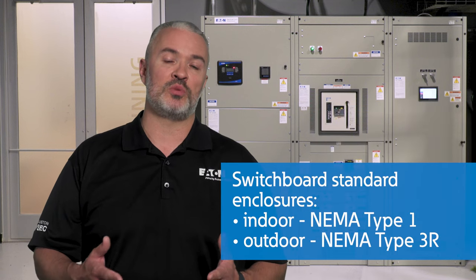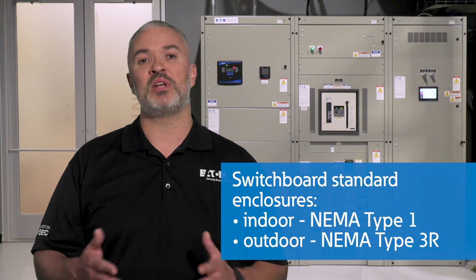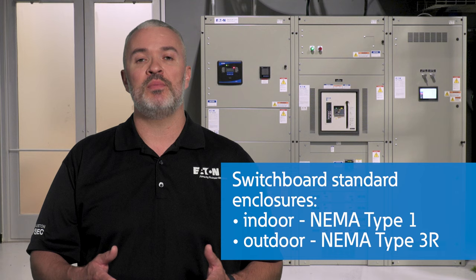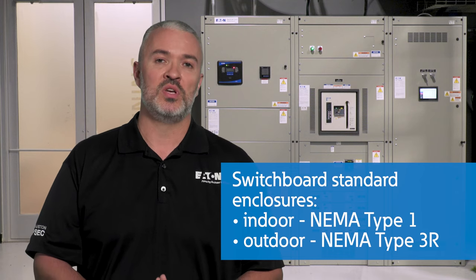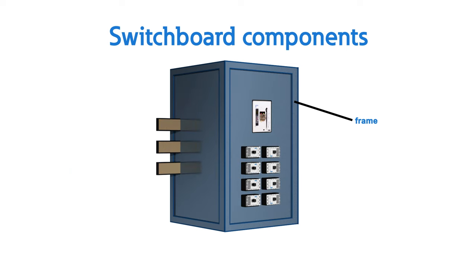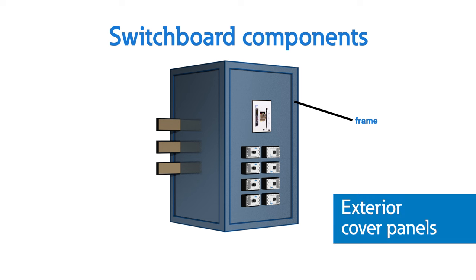Standard enclosures for switchboards include NEMA Type 1 for indoor and NEMA Type 3R for outdoor uses. After equipment installation, the frame is enclosed with the exterior cover panels. Like the dead front of a panel board, these covers allow for access to protective devices while sealing off the bus and wiring from accidental contact.